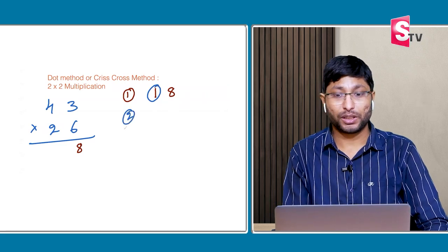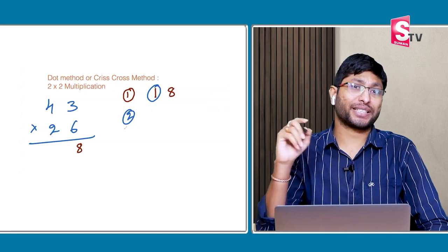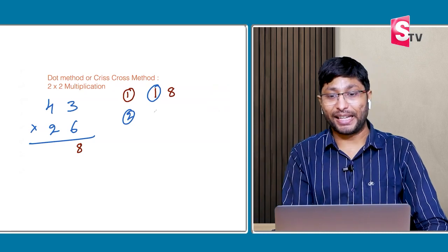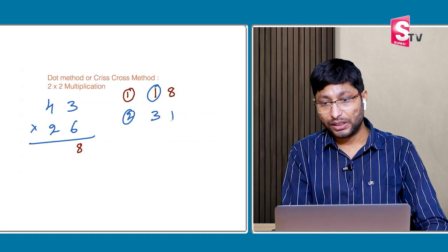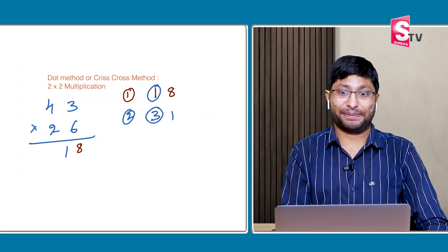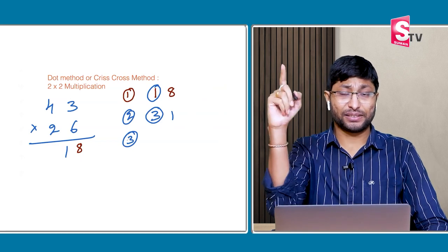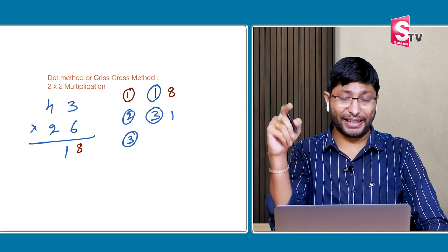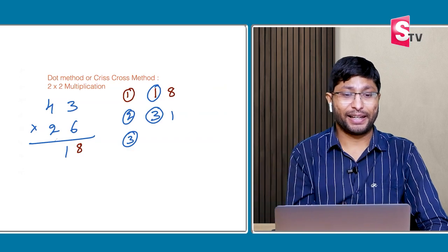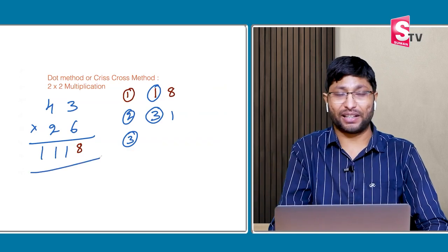Step 2: 4 sixes are 24, and 3 twos are 6. 24 plus 6 is 30, plus 1 carry is 31. Write down the 1, and 3 will be carry. Step 3: 4 twos are 8, plus 3 carry is 11. The answer is 1118.